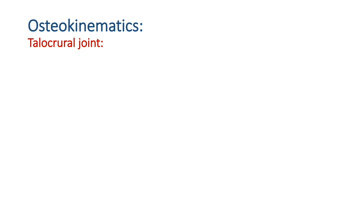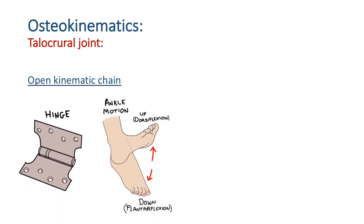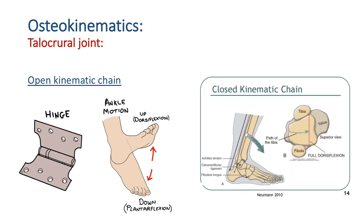The movements occurring at the talocrural joint are dorsiflexion and plantar flexion. We can discuss osteokinematics in open kinematic chain and closed kinematic chain. During open kinematic chain, the talus along with the foot moves on the tibia, whereas in closed kinematic chain the tibia moves on the talus because the foot is fixed on the ground. Because of these differences, the arthrokinematics will be different during open and closed kinematic chain.